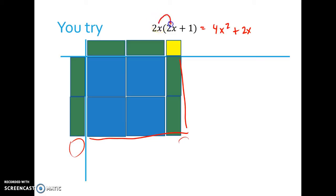I just want to point out that a lot of you already know how to distribute. So if you're distributing, that would be 4x squared plus 2x. But it also works with the algebra tiles.